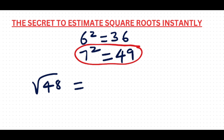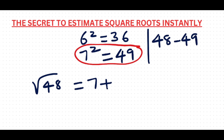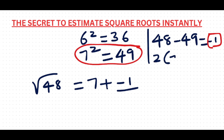The square root of 49 is 7, so you write 7, plus a fraction. To get the fraction, you take the number 48 and subtract the nearest perfect square, which is 49. So 48 minus 49 gives you negative 1. That negative 1 is the numerator, so negative 1 goes here, divided by the denominator.